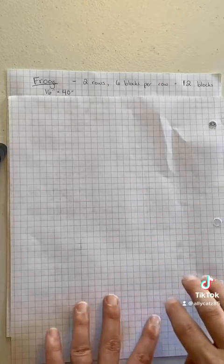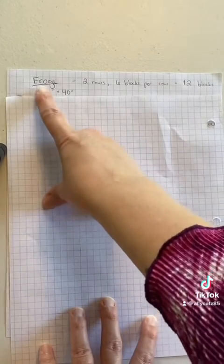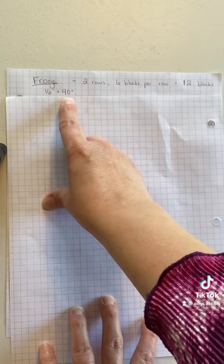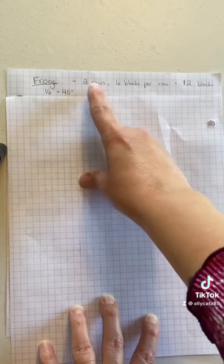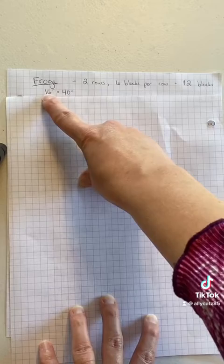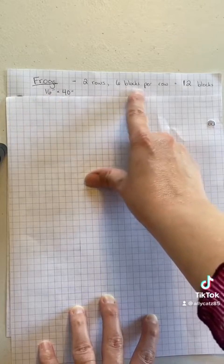And here's how you determine how many blocks you need. So for the frog fabric, it's 16 inches wide by 40 inches long. So I can get two rows from that 16 inches, and then six blocks per row from that 40 inches. So that will give me 12 blocks out of the frog fabric.